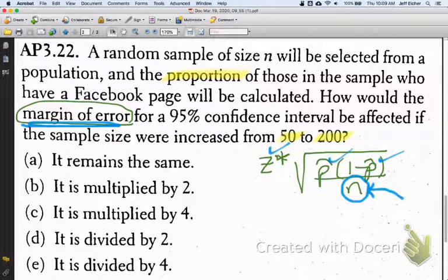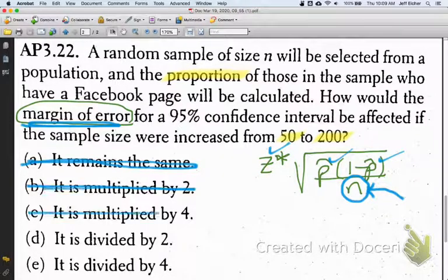So, if you take a bigger sample, you're going to get more precise estimates. You're going to have a smaller margin of error, so the margin of error will not remain the same. The margin of error will not multiply by 2, and the margin of error will not multiply by 4. The margin of error is getting smaller.